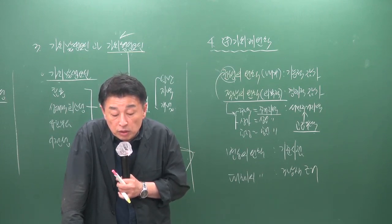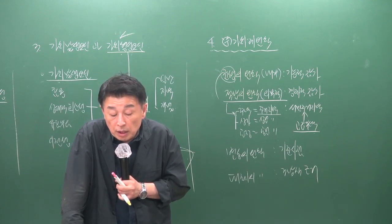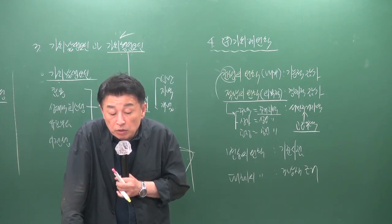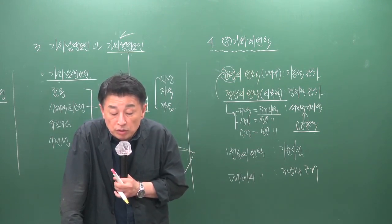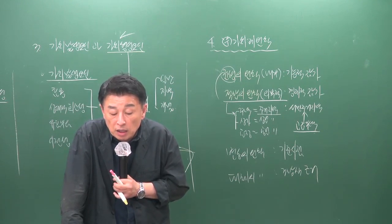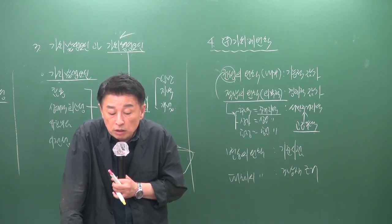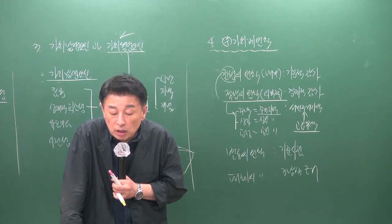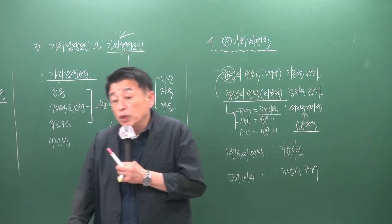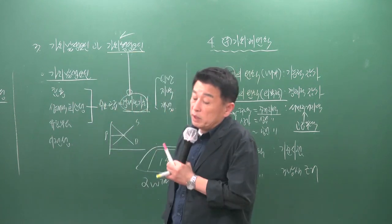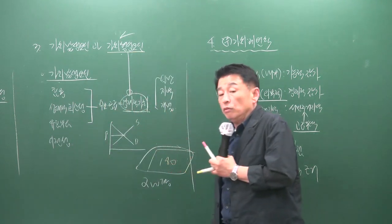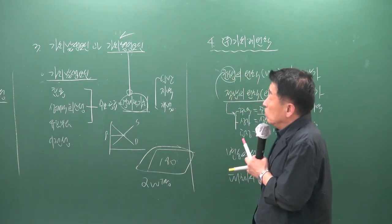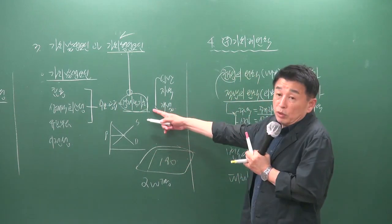11번 문제 부동산 가격 제원칙에서 1번 보기는 부동산 가격이 가치형성 요인의 변화에 따라 상호 인과관계의 변동 과정에서 형성된다는 것이 변동의 원칙입니다. 가치형성 요인 중 일반적 요인은 사회적·경제적·행정적 요인으로 구성되며, 이 요인들은 계속 변화합니다.